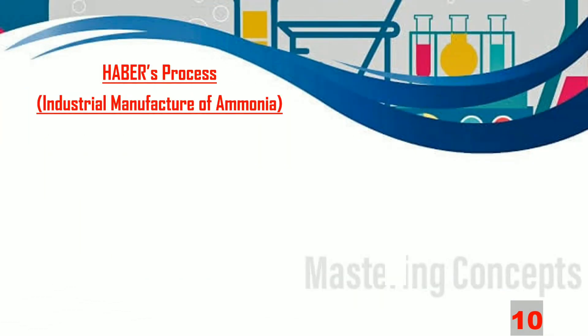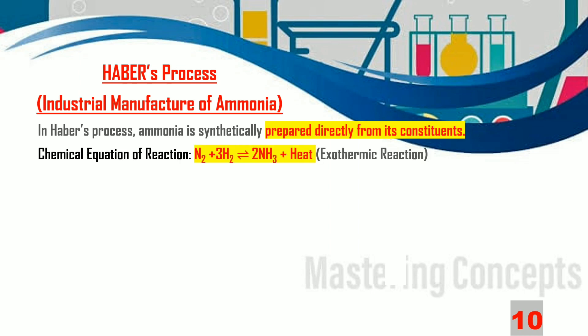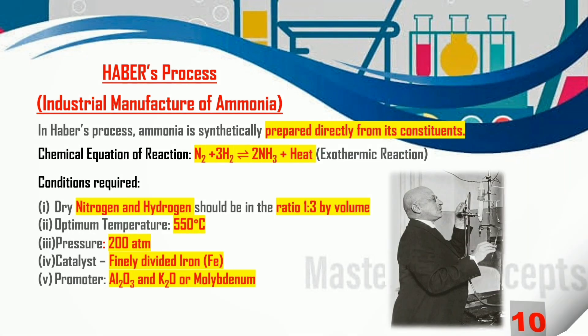Let us now find out how ammonia gas can be prepared directly from its constituents. The process is called Haber's process and it is the industrial process for the manufacture of ammonia. In this process, nitrogen and hydrogen gas directly combine with each other to form ammonia with the evolution of heat. The reagents nitrogen and hydrogen should be in the ratio 1:3 by volume.